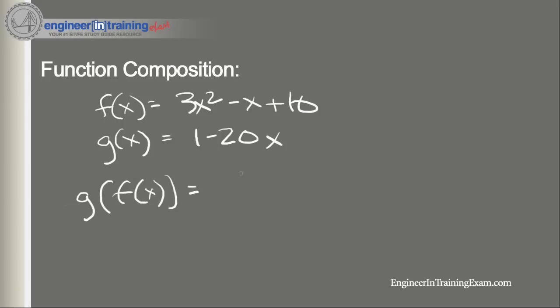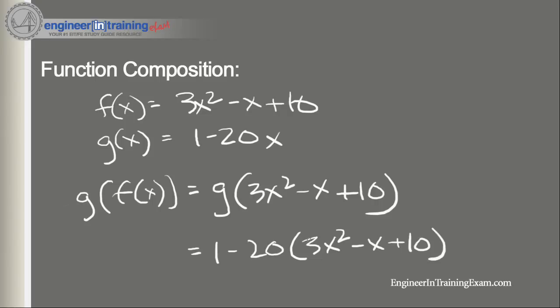That will come out to be g(3x² minus x plus 10), which is equal to 1 minus 20(3x² minus x plus 10), which is equal to -60x² plus 20x minus 199. So to compare that to the previous example, we see that by interchanging the same functions, we got two different answers.